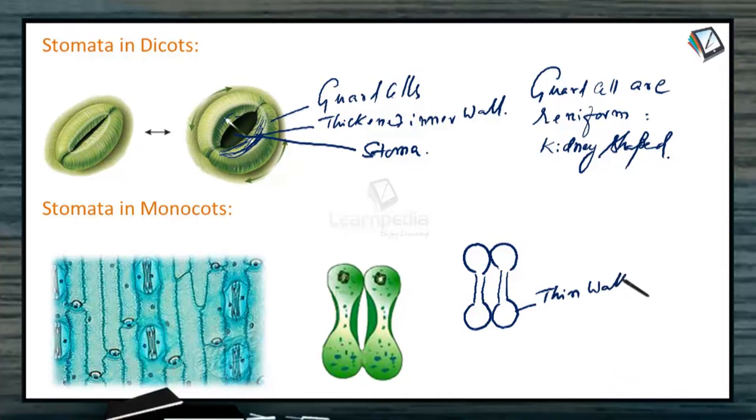And in the middle, the cell wall is thickened. This also contains chloroplasts. These are the chloroplasts. Of course, the nucleus will be there.